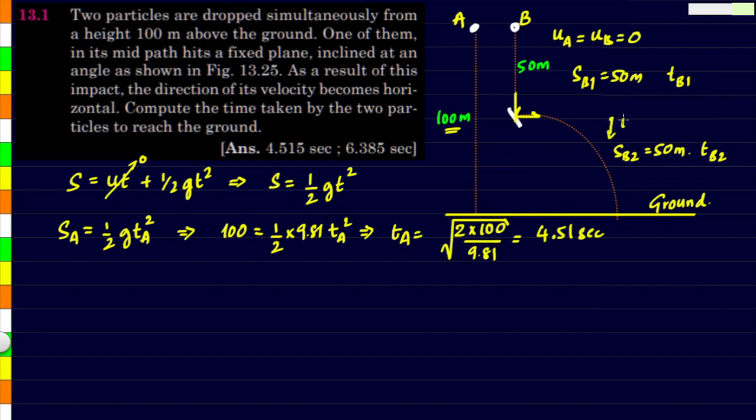What happens at this particular point is that the initial velocity of B in the second state of its motion is again equal to zero. So sB1 = 1/2 g tB1².